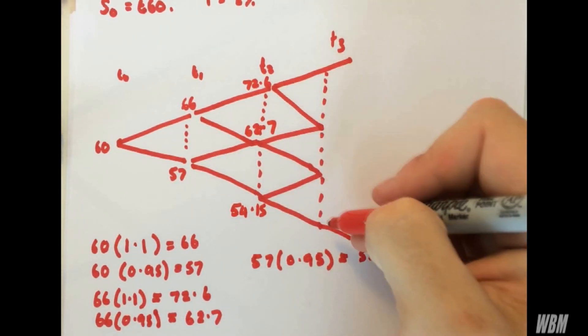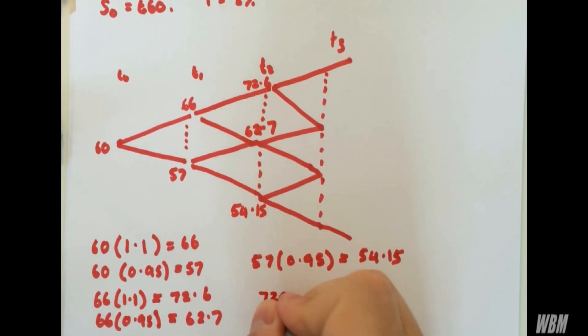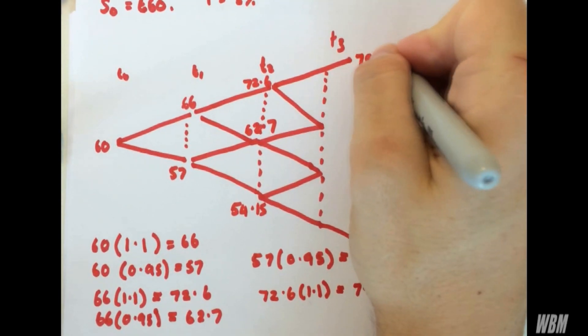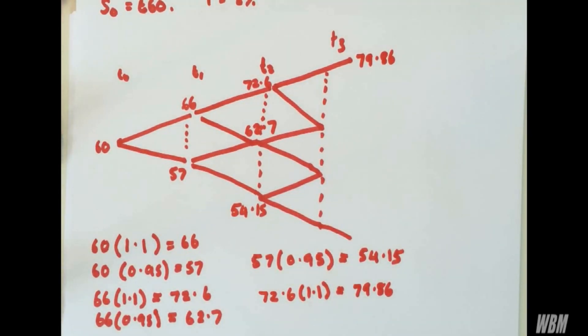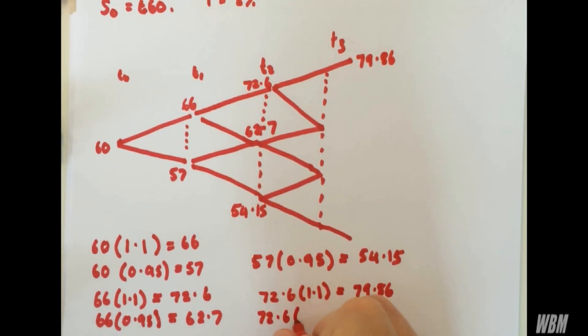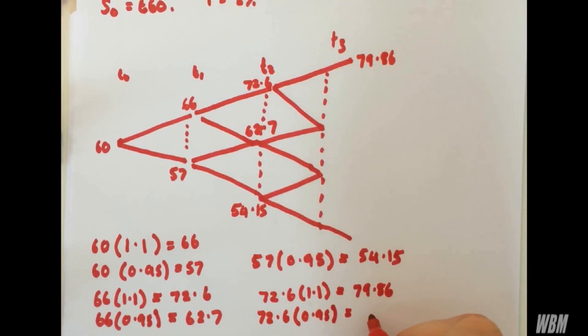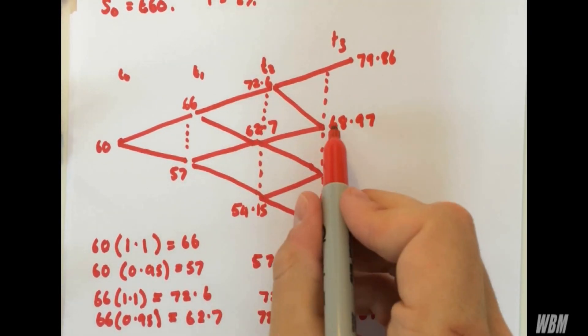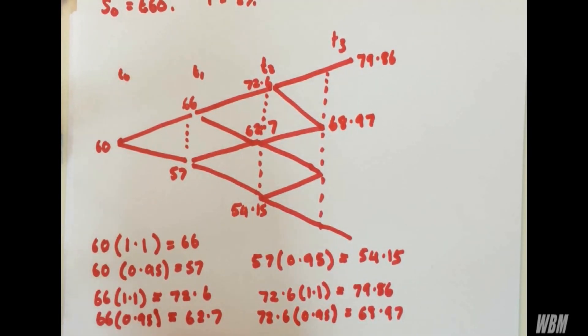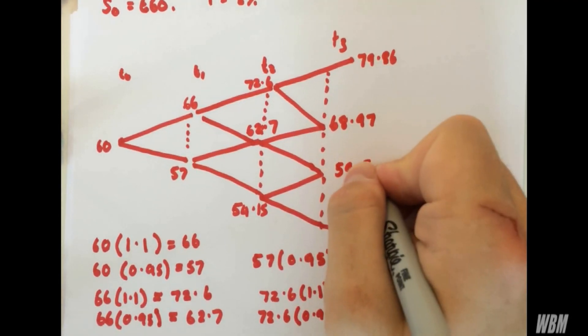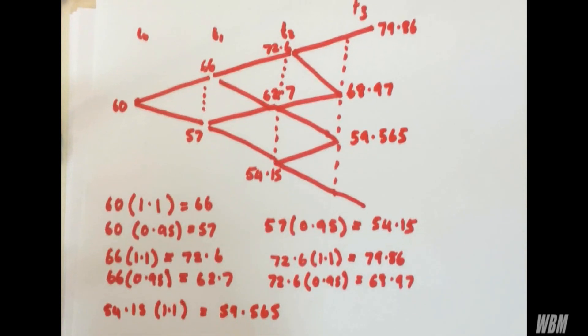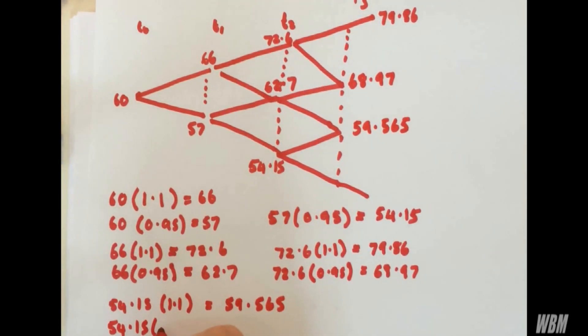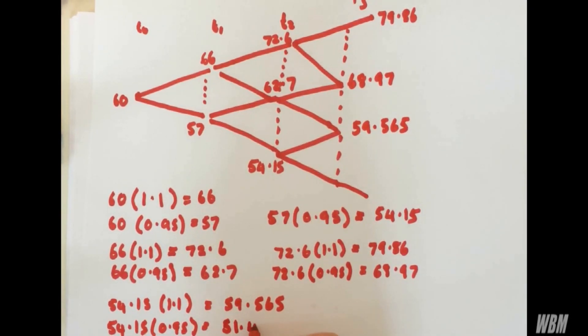We've calculated the values at time step 2. Now let's have a look at the final values. 72.6 by 1.1 is 79.86. And it can go down, 72.6 by 0.95 is 68.97. We'll do 54.15 by 1.1 is 59.565. And 54.15, the lowest value we can have, by 0.95 gives us a nice low value of 51.443.